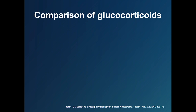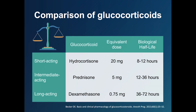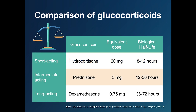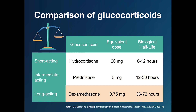There are many types of glucocorticoids that are commonly prescribed. Generally, glucocorticoids are grouped into short-acting, intermediate-acting, and long-acting. Some commonly prescribed examples include hydrocortisone, which lasts between 8 to 12 hours; prednisone, which lasts between 12 to 36 hours; and dexamethasone, which lasts between 36 to 72 hours.